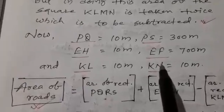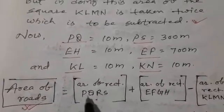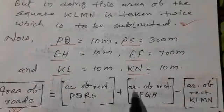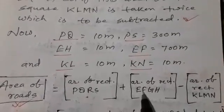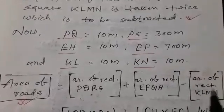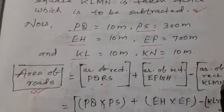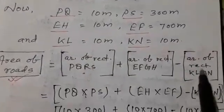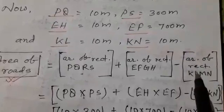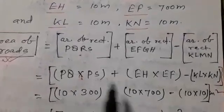Now we need to find area of crossroads. So area of crossroads is equal to area of rectangle PQRS plus area of rectangle EFGH minus area of square KLMN. Because this comes two times, one time is to be subtracted. Now put up the values.